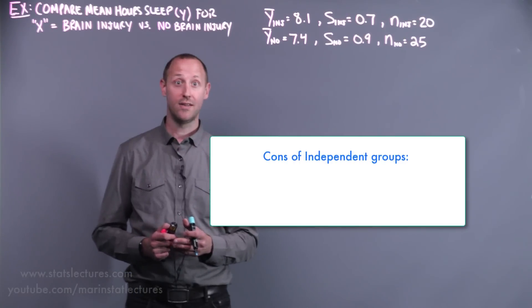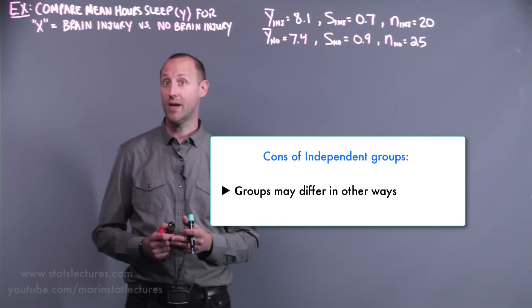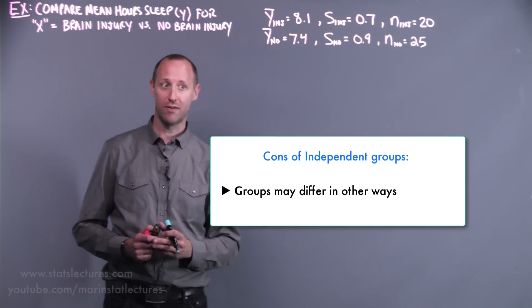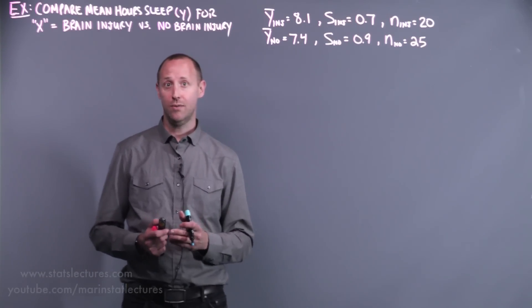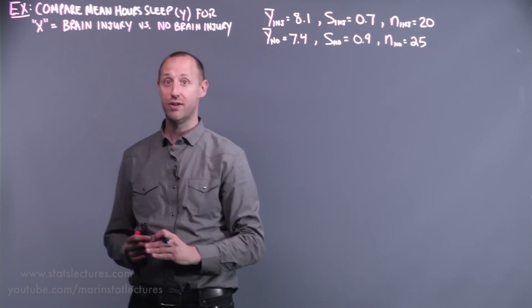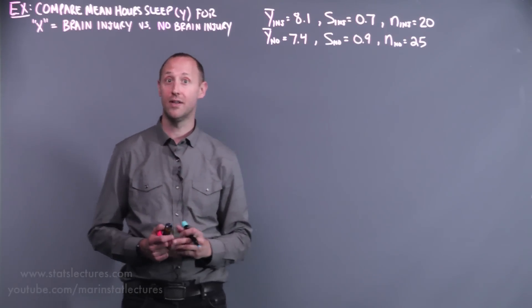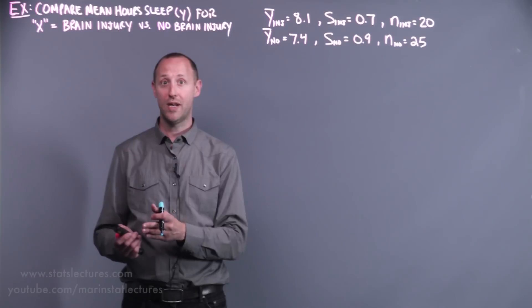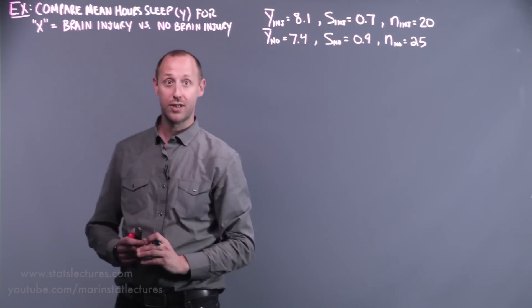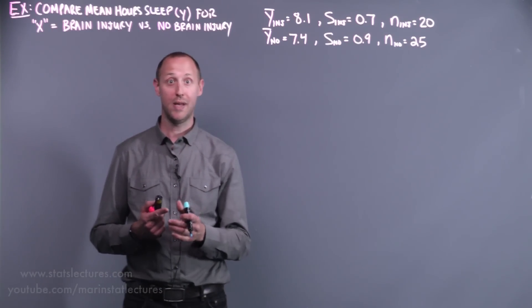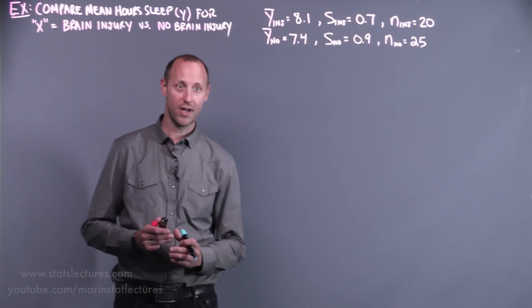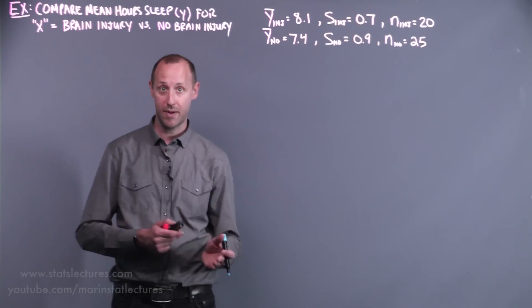One of the cons is that the groups may differ other ways other than just the treatment they're given or which group they belong to. In the example we're going to look at, we're comparing people who've had a previous brain injury versus people who haven't and looking at the number of hours that they sleep. People with brain injuries and without may differ in other ways. For example, they may be more prone to playing sports or exercising, they may be younger or older on average, or they may be more likely to be males or females.